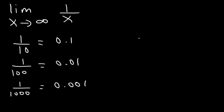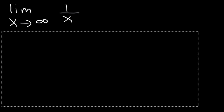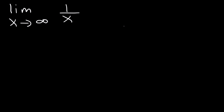Therefore, we can say that 1 over infinity, which is a very, very large number, is going to be about 0. So the limit as x approaches infinity of 1 over x is therefore equal to 0.